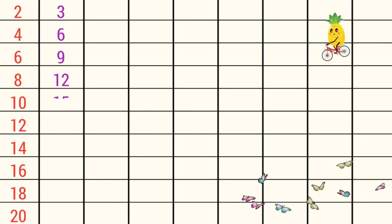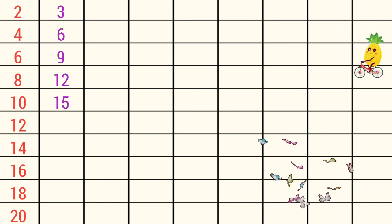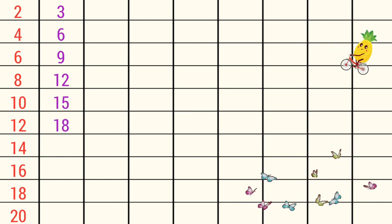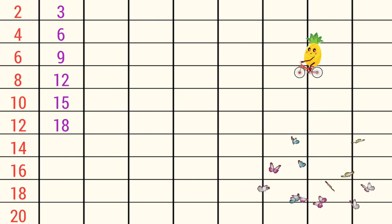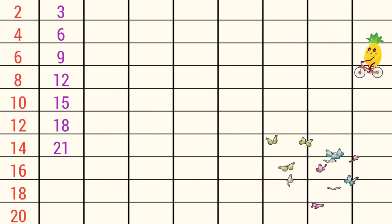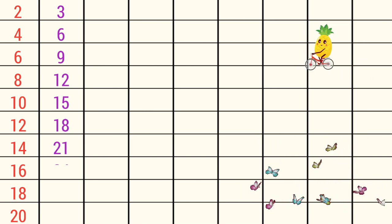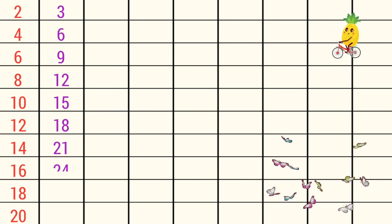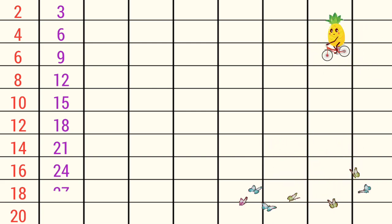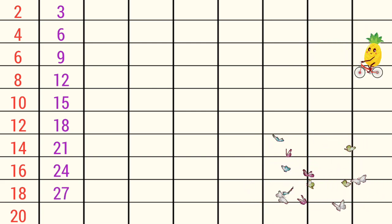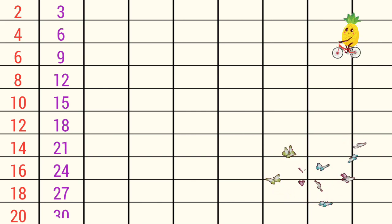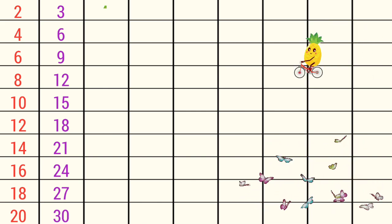3 5s are 15, 3 6s are 18, 3 7s are 21, 3 8s are 24, 3 9s are 27, 3 10s are 30.